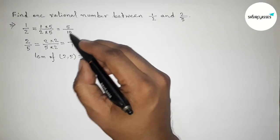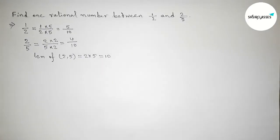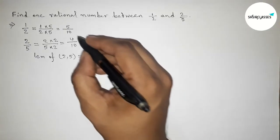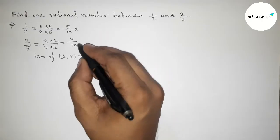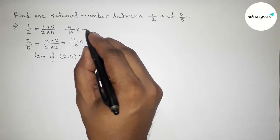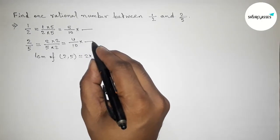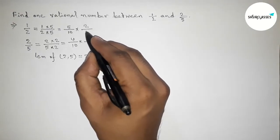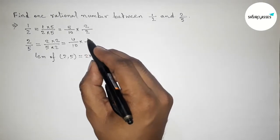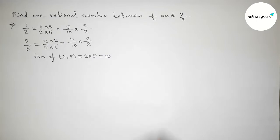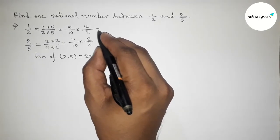Next, we have to find one rational number, so we have to multiply both rational numbers by a number. Here, taking up and down 2, similarly taking here 2, to find one rational number.